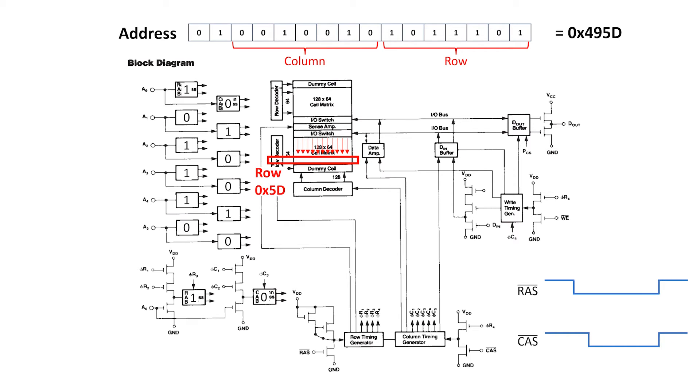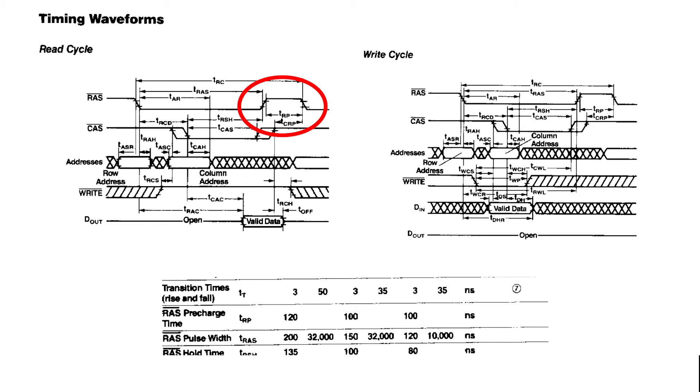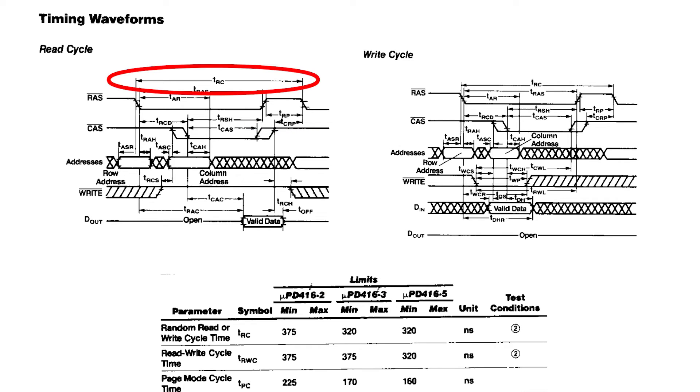Once this is all done, the chip needs some time to prepare the internal 128-bit bus for the next memory access, and this takes at least 100 nanoseconds. So the entire random access cycle time for the chip is 320 nanoseconds.